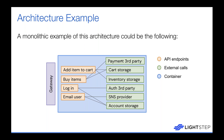Buy items talks to cart storage and a third-party payment service — something like Stripe — to process payment and figure out what items are in the user's cart. Login talks to a third party like Auth0 and also to account storage where the username and account status are stored. Email user talks to an SNS or email provider to push notifications, and also to account storage to look up the user's email address.